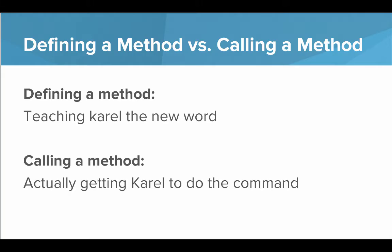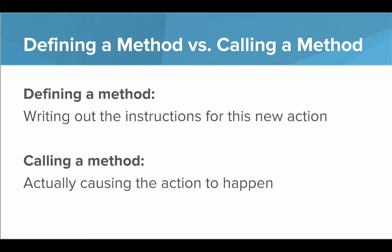Calling a method is actually getting Carol to do the command. It's actually commanding Carol, okay Carol now turn right. Another way to think about it is that defining a method is writing out the instructions for this new action and calling a method is causing that action to happen.